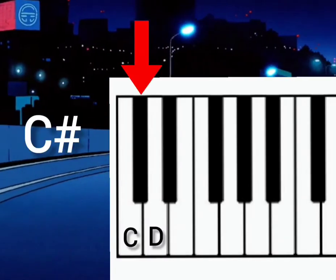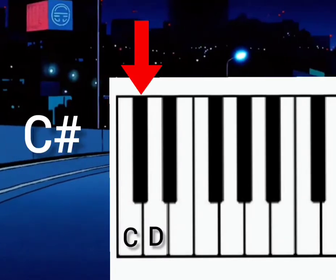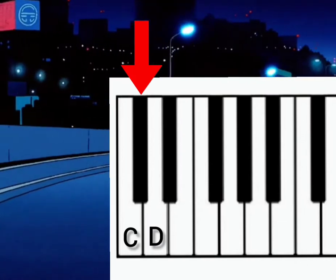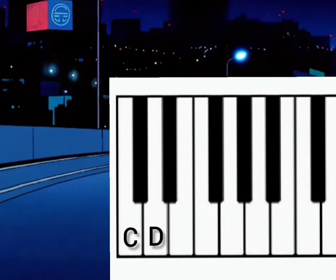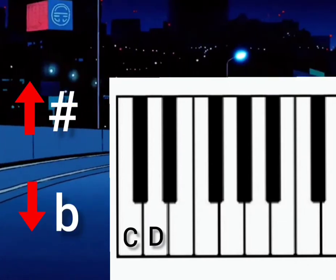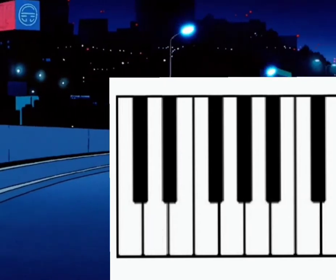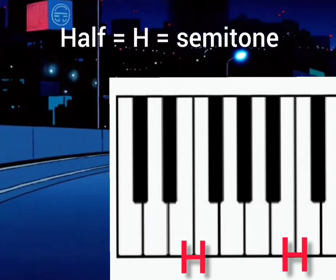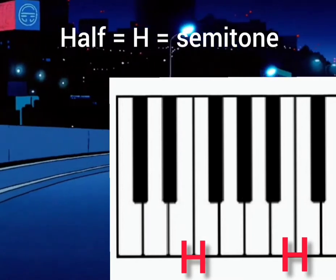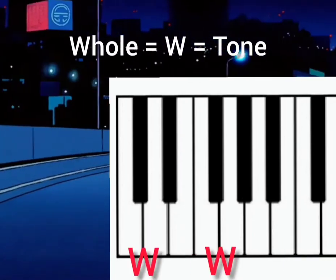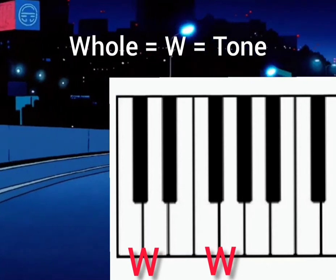Black keys have relative names. For example, this note can be C sharp or D flat. We use these symbols to say that a note is a semitone above or below a certain note. A semitone is the immediate distance between two notes, and a tone is like two semitones.